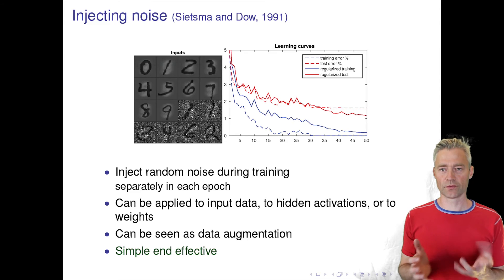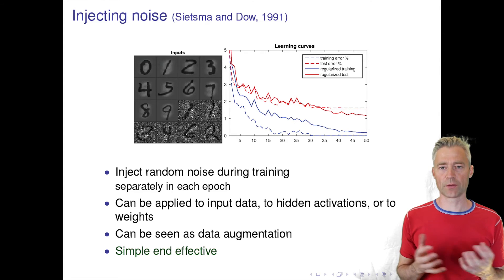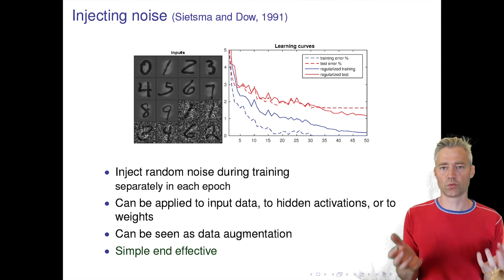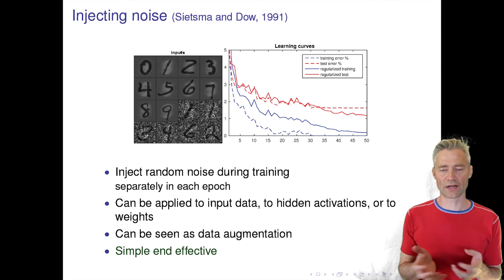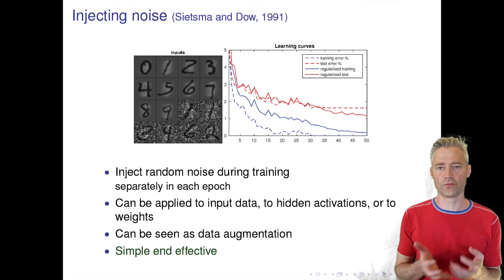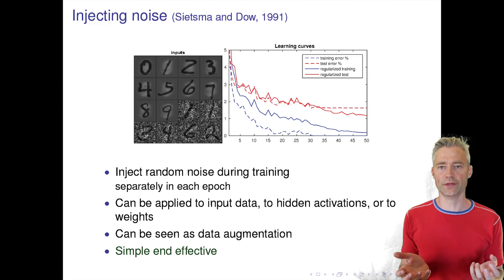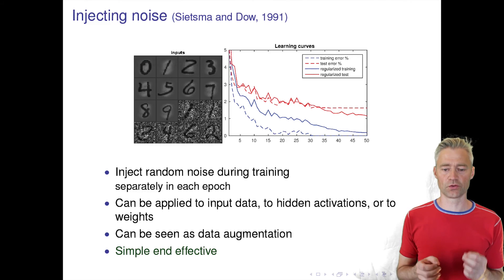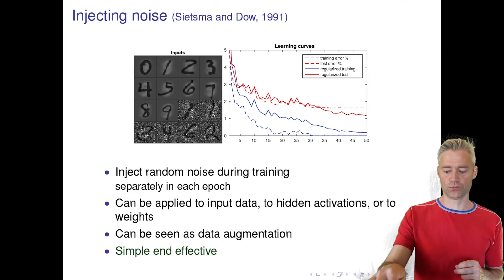This introduces hyperparameters — how large should the noise be that we introduce — so it's not trivial to do.